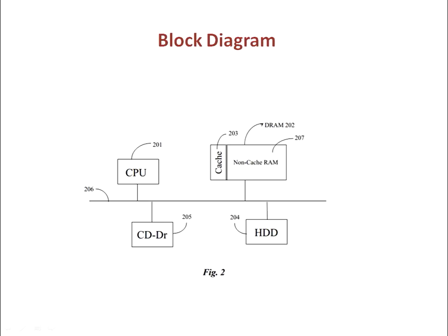Here is an example of a simple block diagram. This one illustrates a simple architecture for a computer, illustrating a central processing unit, a CPU, a compact disk drive, CDDR, a dynamic random access memory, DRAM, with a cache, and a hard disk drive, HDD, all connected through a bus system 206. Notice that the element number convention is followed. When showing elements of computer systems and other electronic devices, simple blocks are often used, hence the name block diagram.